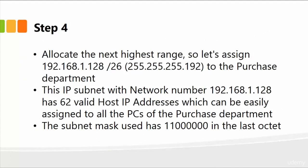Step four is simply allocating the next highest range. Once you're done with the sales department, the next is the purchase department with about 50 computers. We will allocate the next set of IP addresses — the network number 192.168.1.128 — which has 62 valid host IP addresses, easily assigned to all computers in the purchase department. The subnet mask used is 111 and then seven zeros; you're just borrowing a bit and moving it in the last octet.